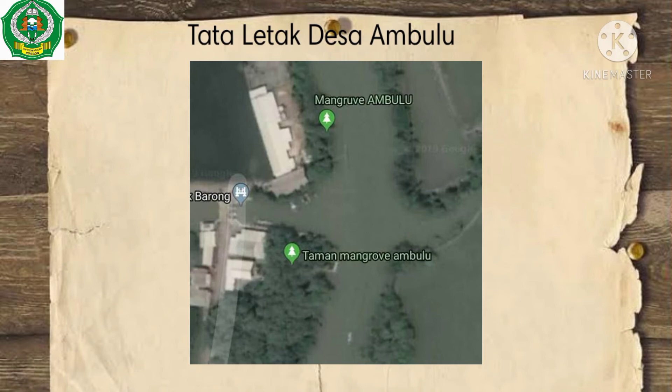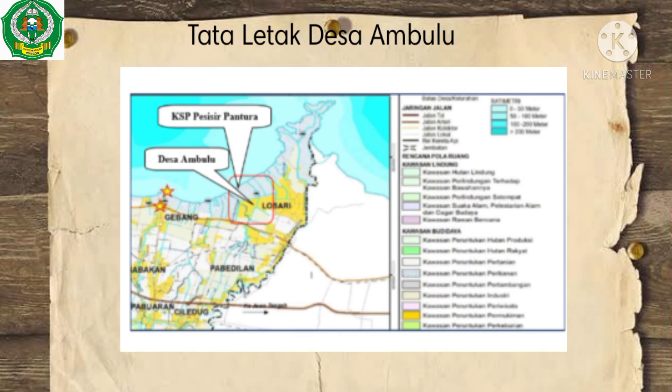Mangrove Caplok Barong, Desa Ambulu. Desa Ambulu adalah salah satu desa peserta piloting yang memiliki pemerintahan seperti RT, RW, desa, dan digunakan sebagai dasar penyusunan RPJM desa. Rencana pemanfaatan ruang desanya disesuaikan dengan RT, RW, kabupaten, dan kondisi lingkungan di Desa Ambulu agar lebih terjaga, karena telah diketahui bahwa desanya merupakan KSP kawasan lindung pesisir pantai utara Jawa.